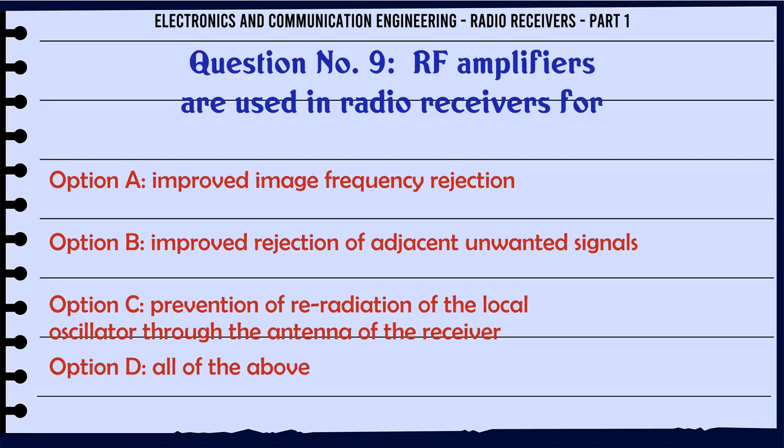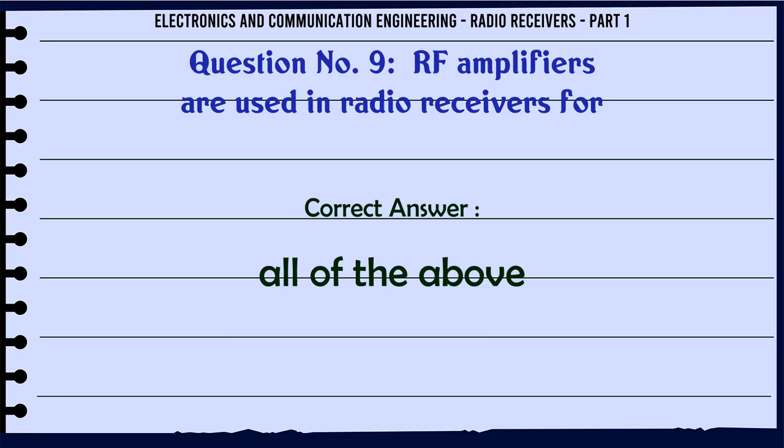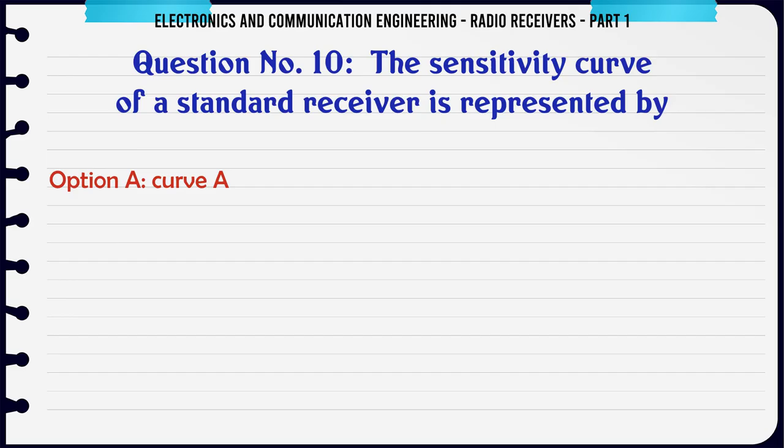RF amplifiers are used in radio receivers for: a. Improved image frequency rejection. b. Improved rejection of adjacent unwanted signals. c. Prevention of re-radiation of the local oscillator through the antenna of the receiver. d. All of the above. The correct answer is all of the above.